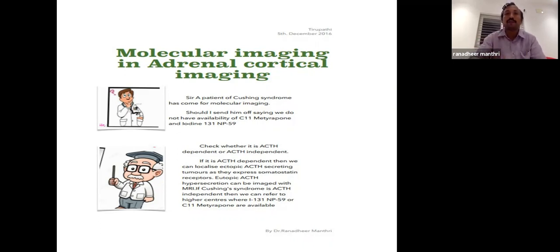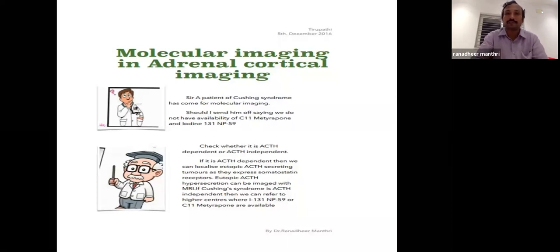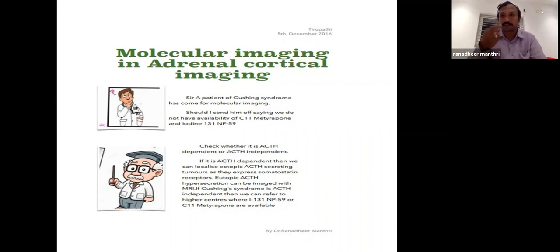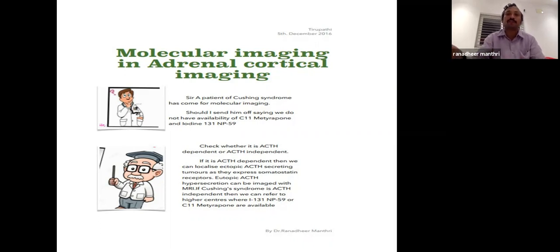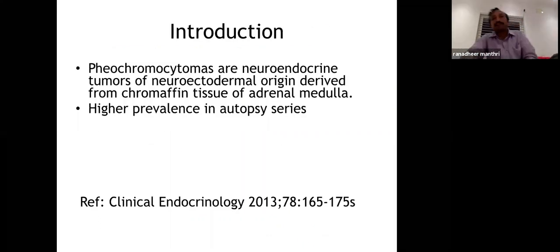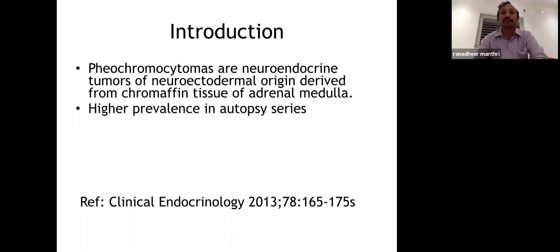We recently had a tumor looking like a soft-tissue neuroblastoma on MRI, but the patient had full Cushing's features. Evaluation with somatostatin receptor imaging revealed ACTH-dependent Cushing's disease with an ectopic source. The small tumor expressed somatostatin receptors, and once it was removed, the Cushing's features resolved. For ectopic ACTH, somatostatin receptor imaging can be used. Now moving to pheochromocytomas — these are neuroendocrine tumors of neuroectodermal origin derived from the adrenal medulla.